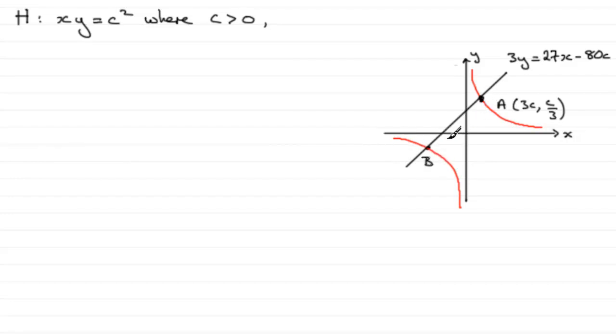So it's going to be simultaneous equations then to get B between the normal and the hyperbola, H. So let's just put down what those equations are then.